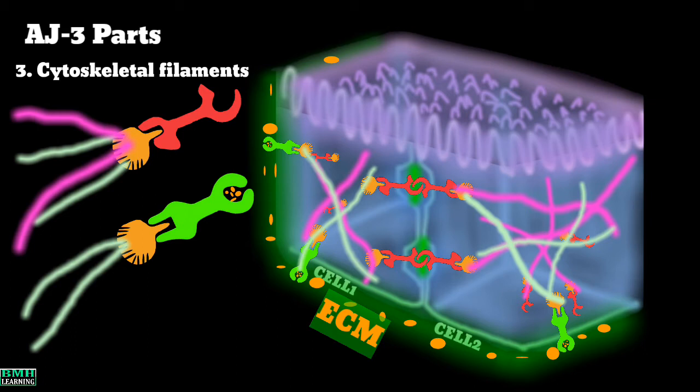The adapter proteins, as we know, are already connected to the adhesive proteins. So cytoskeleton proteins are indirectly linked to the adhesive proteins through adapter or anchor proteins.